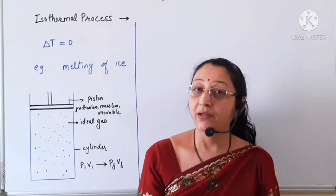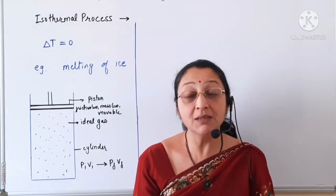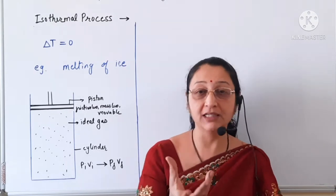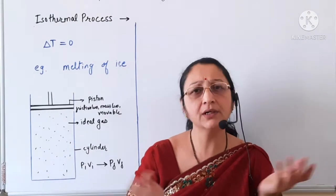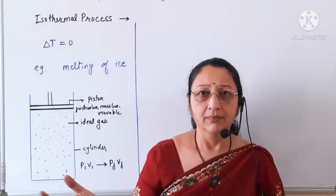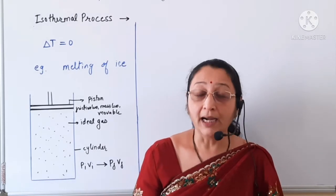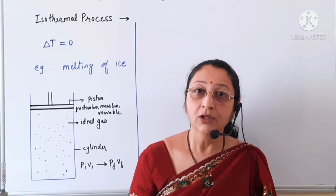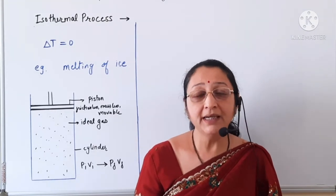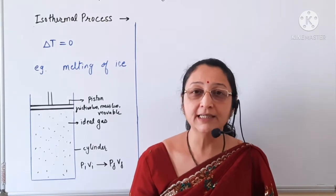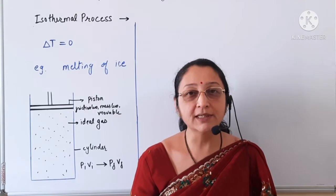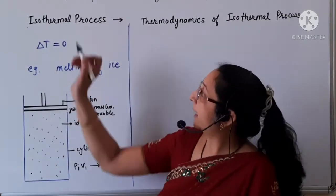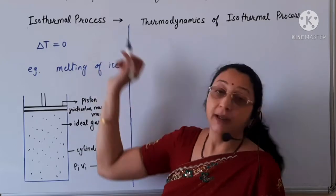An example of an isothermal process is the melting of ice. We know that ice melts but the temperature — the room temperature — remains the same. So at constant temperature the ice is melting. Hence, this melting of ice is an isothermal process.